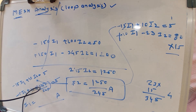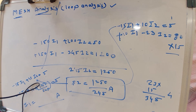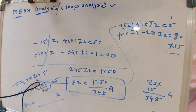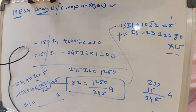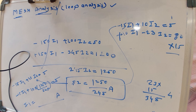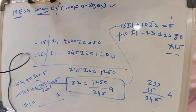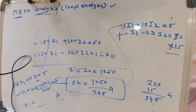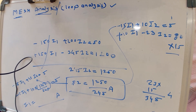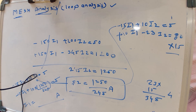Today we studied mesh analysis, also called loop analysis, and how to solve problems using simple methods. To summarize the steps: first identify the number of loops, then apply KVL for each loop, write down the loop equations, and use a simple method or Cramer's Rule to find the values of I1 and I2. In the next session we will go further with Cramer's Rule. Thank you.